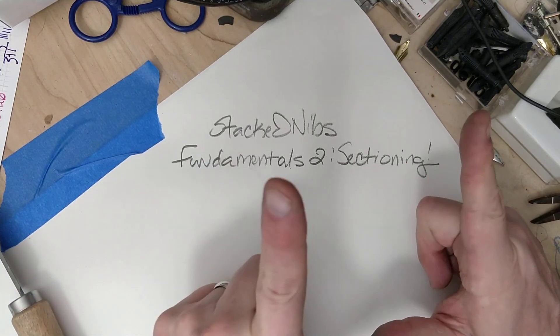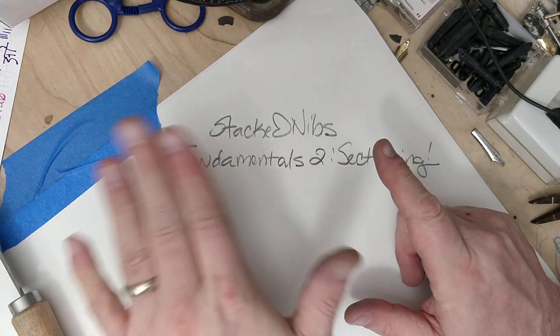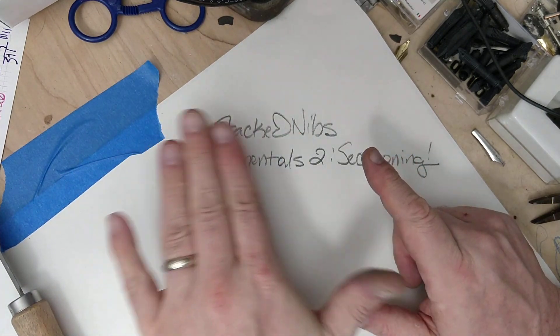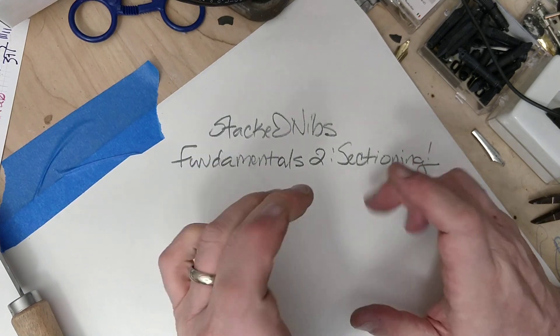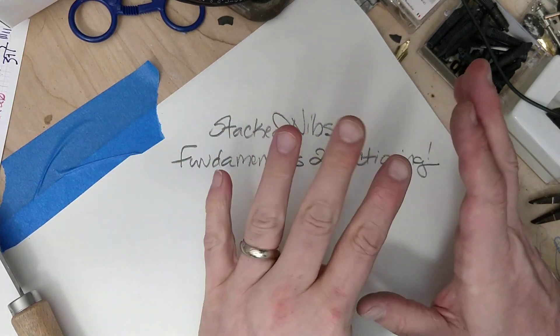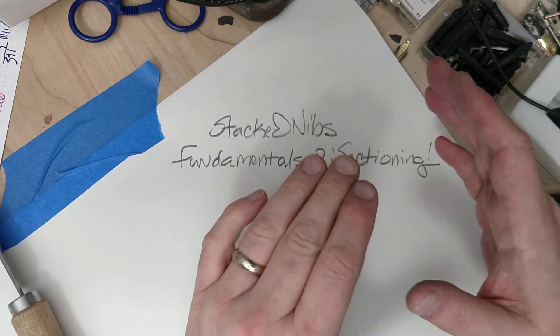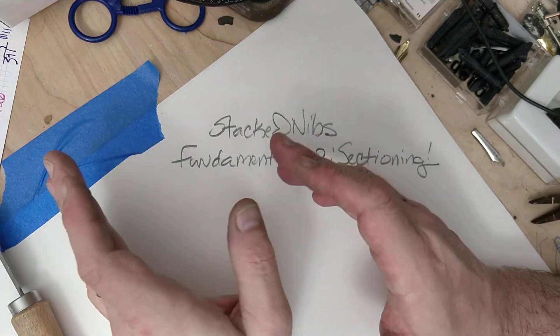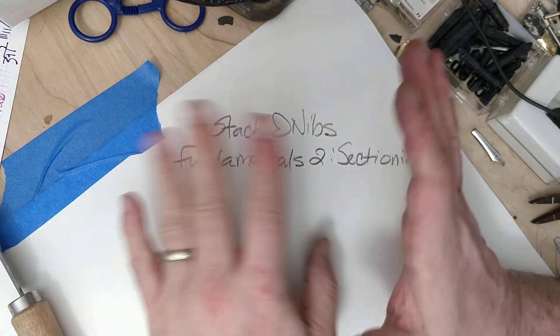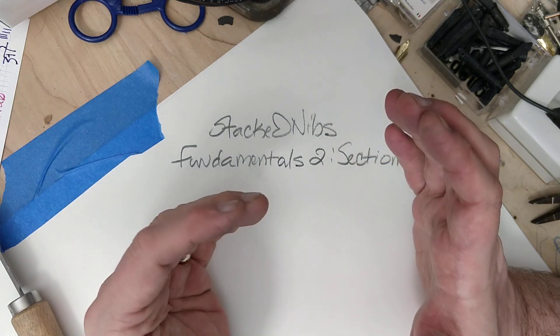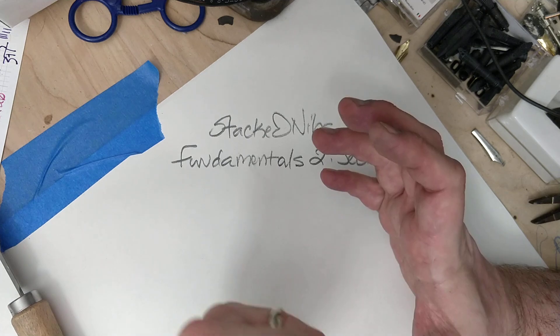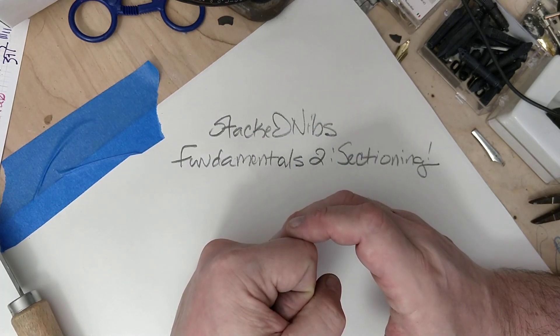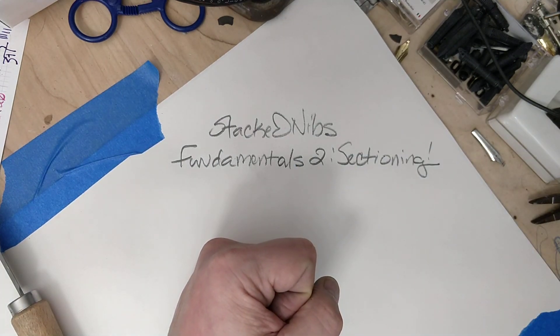So, keep working on shaving off the humps of the tipping material. That also, for later, if you want to go into just grinding, is great. It sets you on the way to cursives, italics, and a bunch of other little things that you might design on your own. Also, thanks for watching. Talk to you soon.